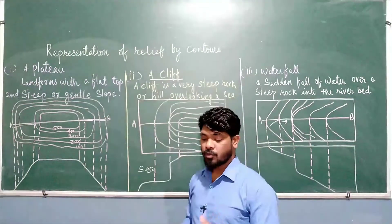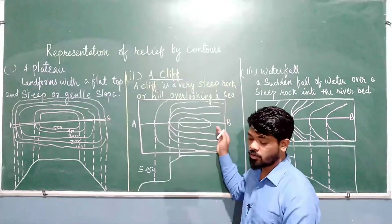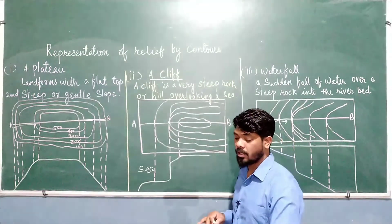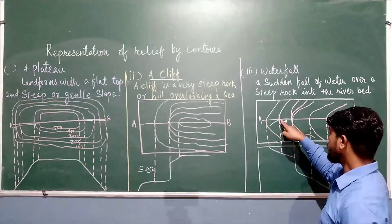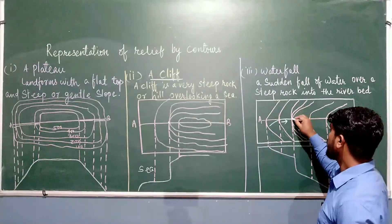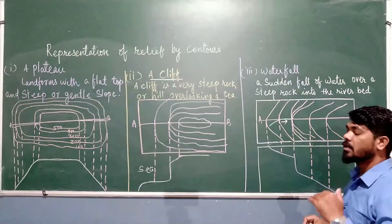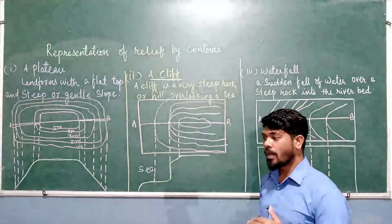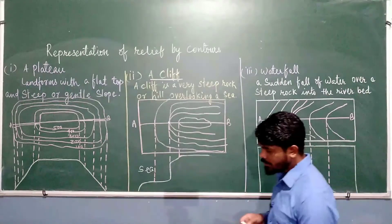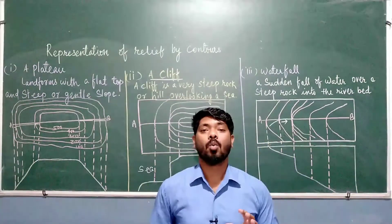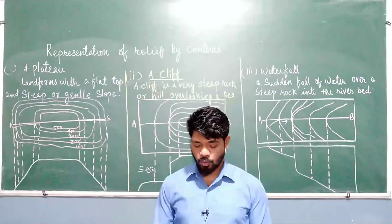Whenever there is a steep slope, two or three contours are shown merging. Note the V-shaped contours in the figure — three contours are seen merging into one while crossing the river, indicating a sudden fall of water at that location. All three contours merge together at one point and there is a blue line, meaning water is passing through and a waterfall is present. In this way we understand that it is a waterfall.